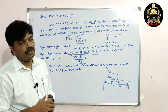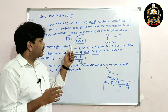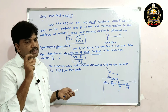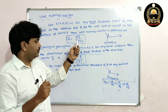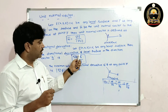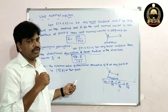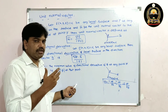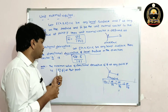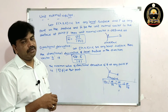To summarize: the unit normal vector is n̄ = ∇f / |∇f|, and the directional derivative is ∇f · ā / |ā|. The maximum value of the directional derivative is |∇f|, achieved along the normal direction.